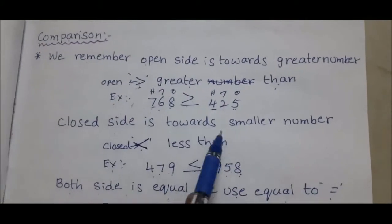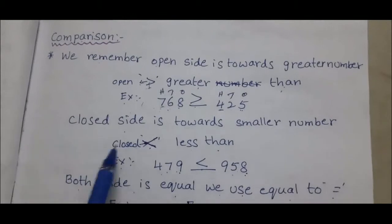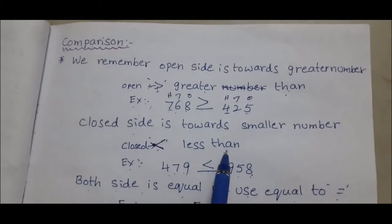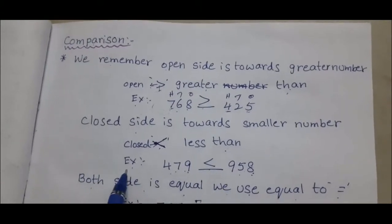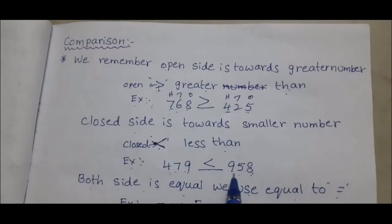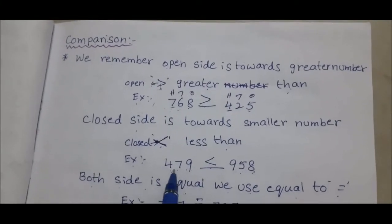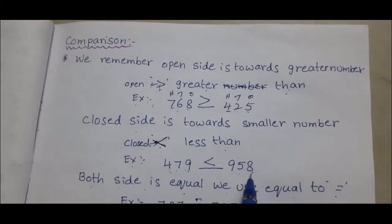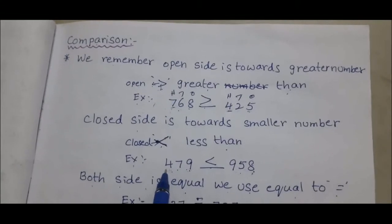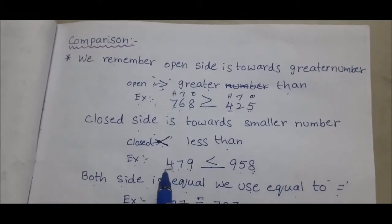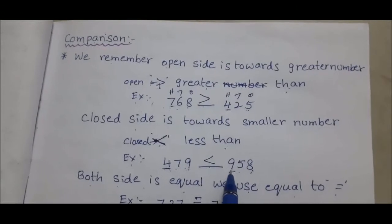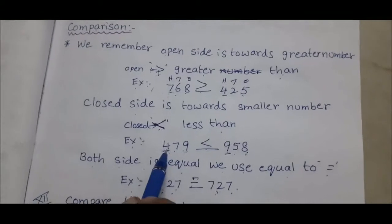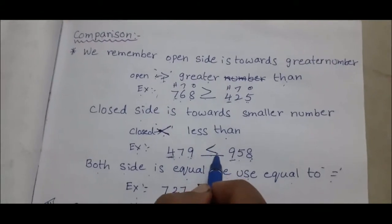The closed side is towards the smaller number — this symbol is known as less than. Example: 479 and 958. We compare first digits — both are 3-digit numbers. We compare hundreds place: 4 and 9. 9 is greater, 4 is less. Since the first number has 4 in hundreds place, we keep the less-than symbol: 479 < 958.